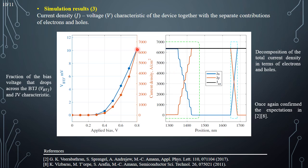The current density at 0.8 volts, multiplied by the area of the buried tunnel junction, gives a current value in good agreement with the reference shown here. The voltage drop across the buried tunnel junction is very small compared to the applied bias. However, the tunneling current density produced is high, which is consistent with this being a Type-III broken-gap tunnel junction, able to carry higher current compared to the simpler homojunction case. From the current decomposition, we can see that the role of the buried tunnel junction is to convert electrons into holes, which then radiatively recombine in the quantum wells.